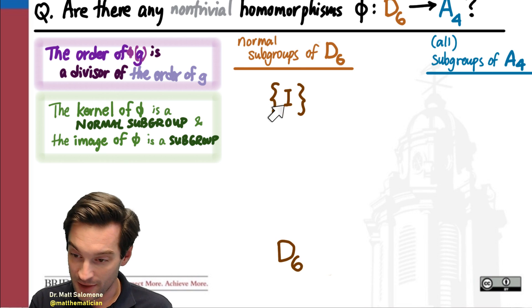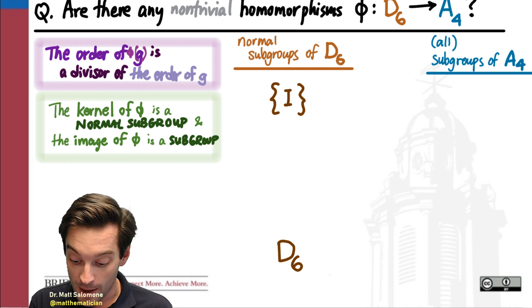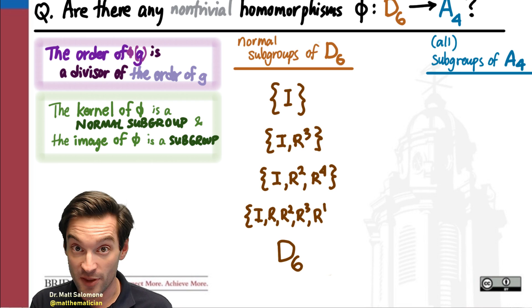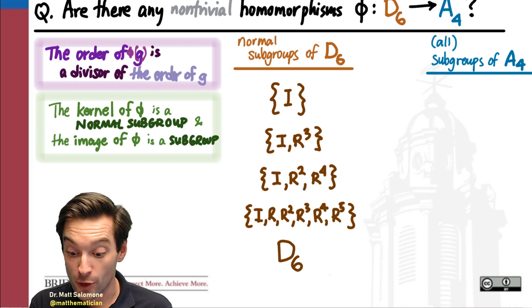And D6, well, the trivial group, the trivial subgroup, as well as the whole group, those are always normal. But D6 also has these other, three other normal subgroups in the middle. And I know we've seen a few of these on our quizzes and in our class activities, right? This turns out to be a full list of all the normal subgroups of D6.